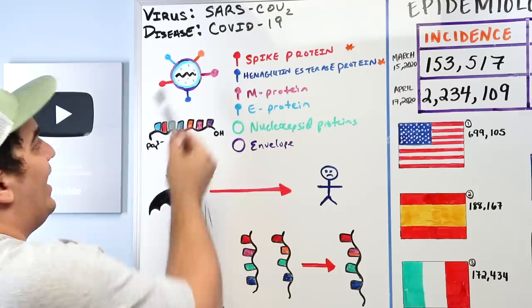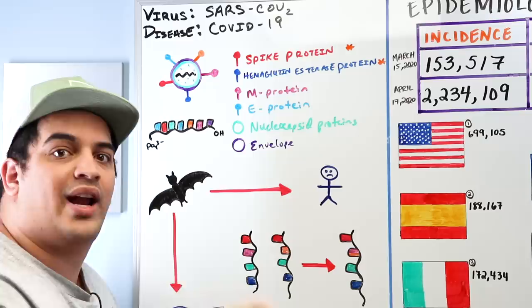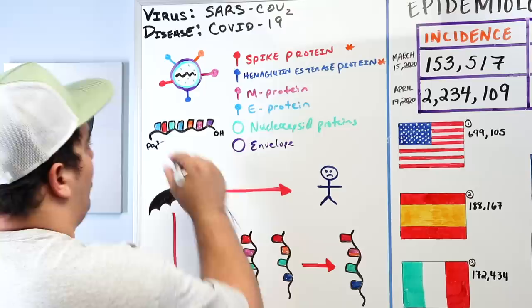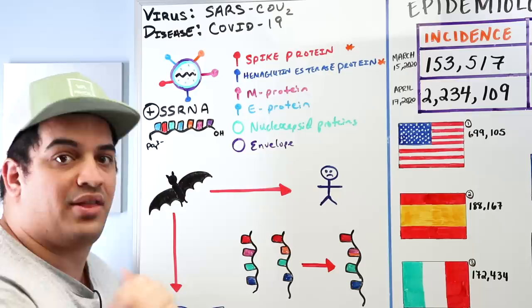The viral nucleic acid is also extremely significant. There are two types: DNA and RNA. This virus contains single-stranded RNA — more specifically, positive sense single-stranded RNA.